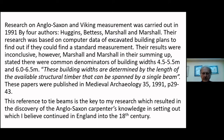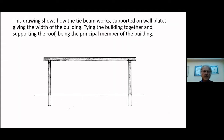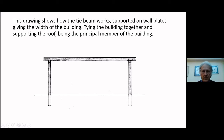This reference to the tie beam is the key to my research, which resulted in the discovery of Anglo-Saxon cantor's knowledge in setting out, which I believe continued in England into the 18th century. This drawing shows how the tie beam works, supported on wall plates, giving the width of the building. Saxon buildings are made with posts in the ground, with a wall plate as far as we know, and held together with a tie beam, holding the main structural timber of the building, which is still seen all the way through medieval buildings. This became the important structural member of the building.